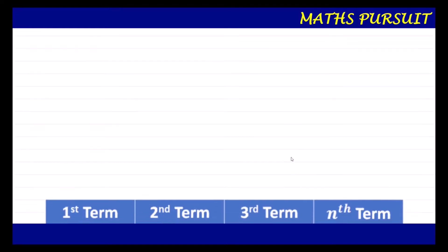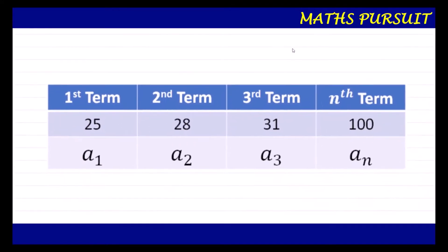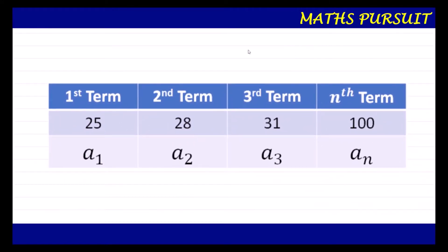I have drawn a table as usual. The first given number, 25, is our first term a1. 28 is the second term a2. 31 is the third term a3. And the last term — the nth term — is an, which is 100.